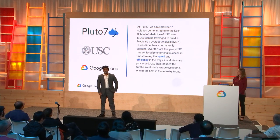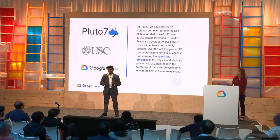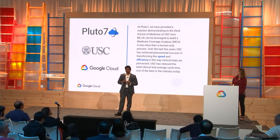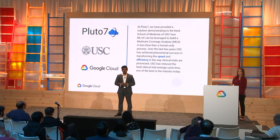Pluto7 is a key partner for implementation of artificial intelligence and machine learning at Google Cloud. We bring AI and ML implementation to customers who either do not have the staff, know-how, or the department, or if they need any extended hands. We understand their use case and what they're trying to achieve, and we work in tandem with customers throughout the journey of machine learning, from project kickoff to production. We went to USC and demonstrated how we can leverage machine learning and AI to automate medical coverage analysis.